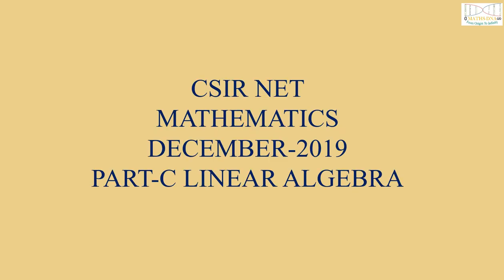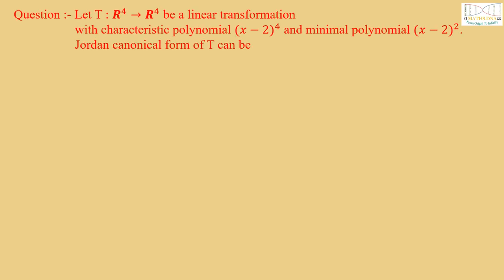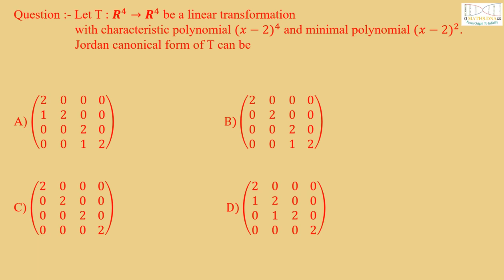Today we are going to solve a question from CSIR NET Mathematics December 2019 Part C Linear Algebra. The question is: Let T from R⁴ to R⁴ be a linear transformation with characteristic polynomial (x-2)⁴ and minimal polynomial (x-2)². Then Jordan canonical form of T can be the options A, B, C, and D.